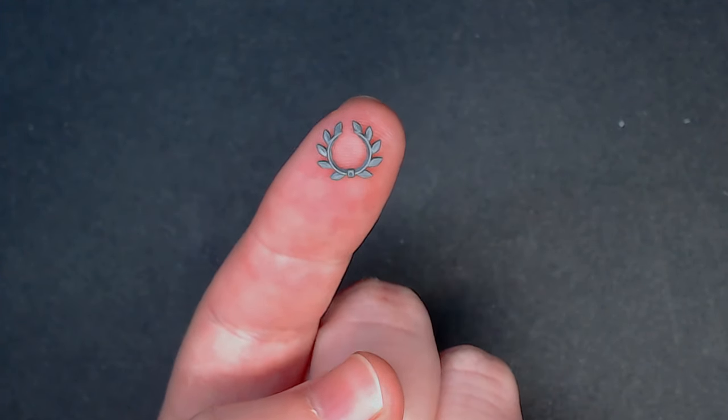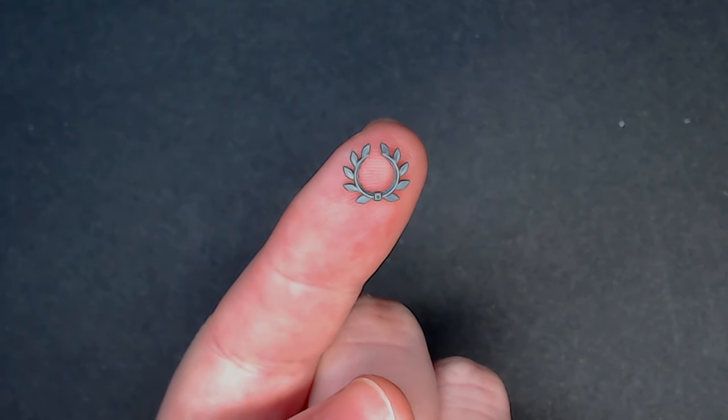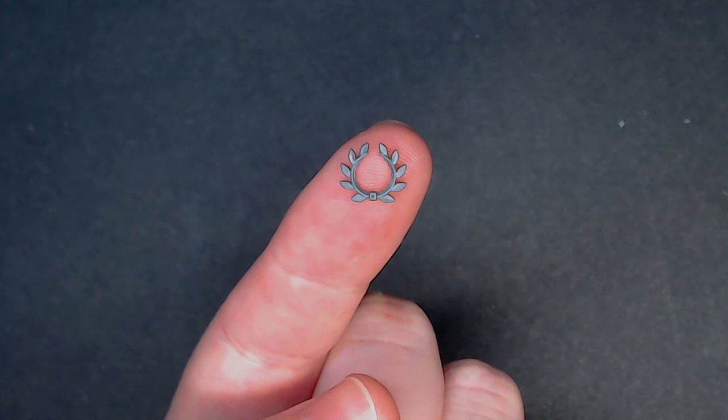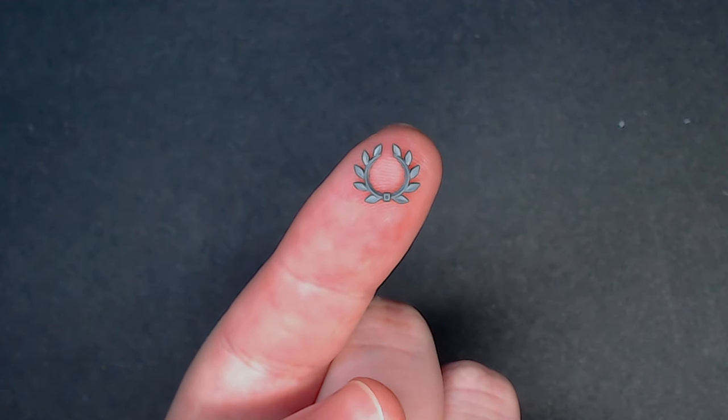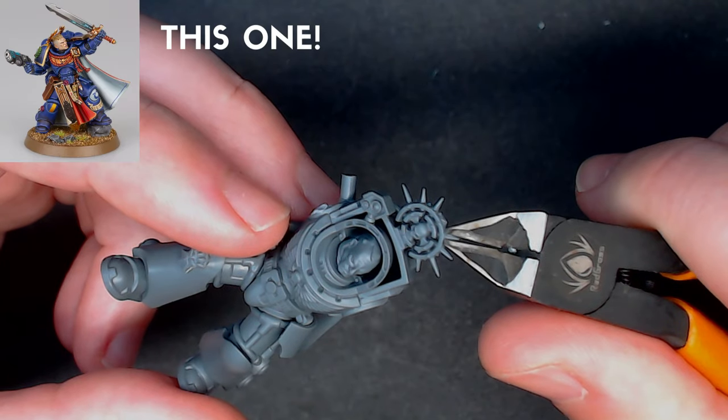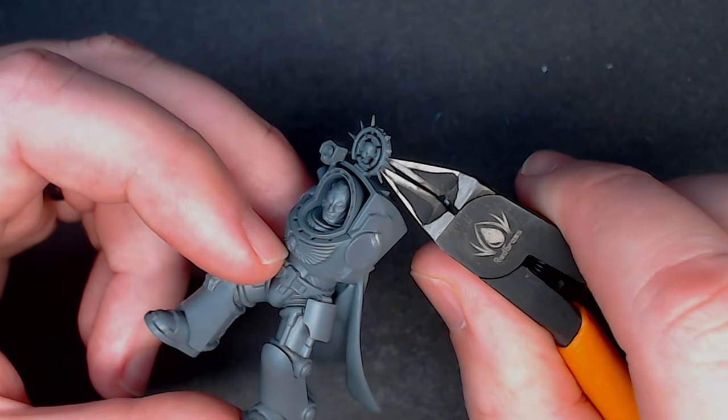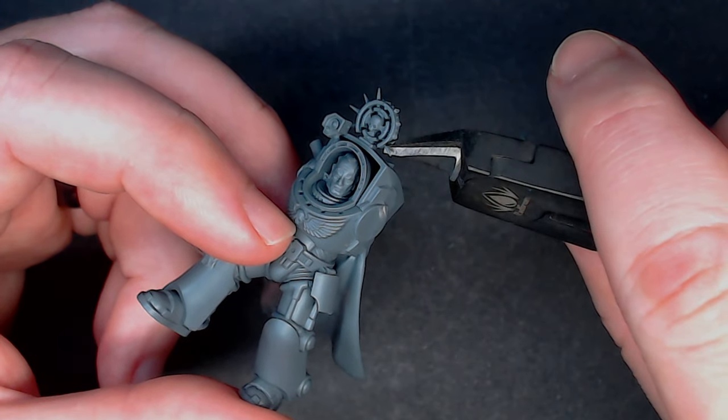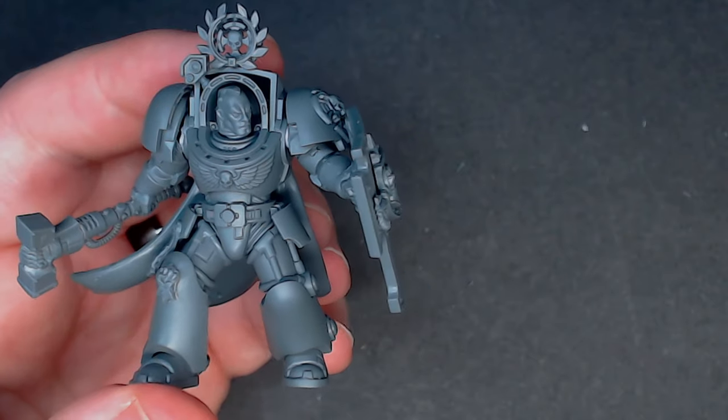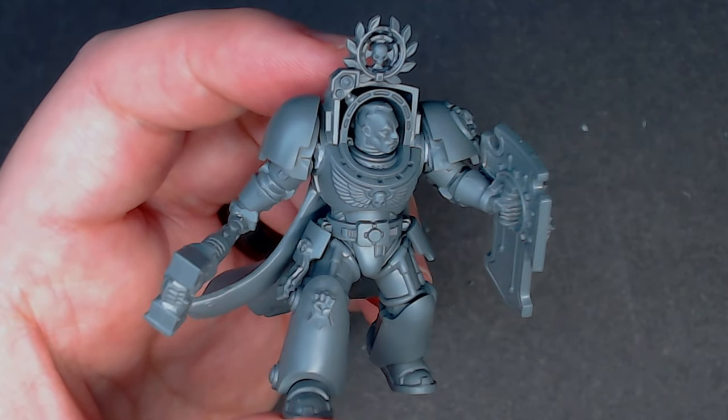Next up I wanted to embellish the iron halo type thing that was at the top of his armour. The original model had a wreath around the skull and I wanted to kind of do something very similar to that. So I took a wreath from a Primaris captain. And then with my clippers I began to remove the spikes around the iron halo that was already on the torso. Once I'd removed all those spikes I then stuck the wreath straight on the front of the iron halo.